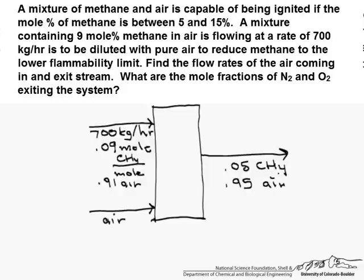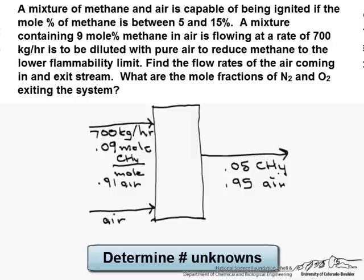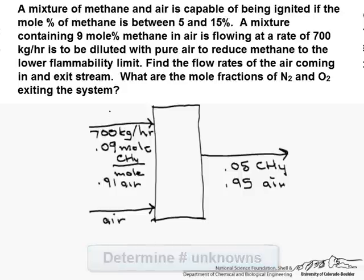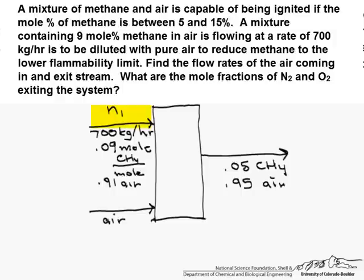So the first thing we have to look at is what are our unknowns, and we certainly don't know the amount of air coming in or the exit stream. In addition though, our stream here is an unknown, because although we're given a mass flow rate coming in, we have mole percents of methane and air. We don't know this stream here, and we don't know this stream here.